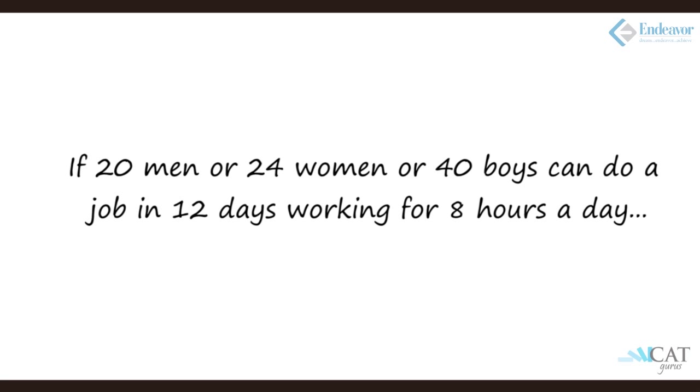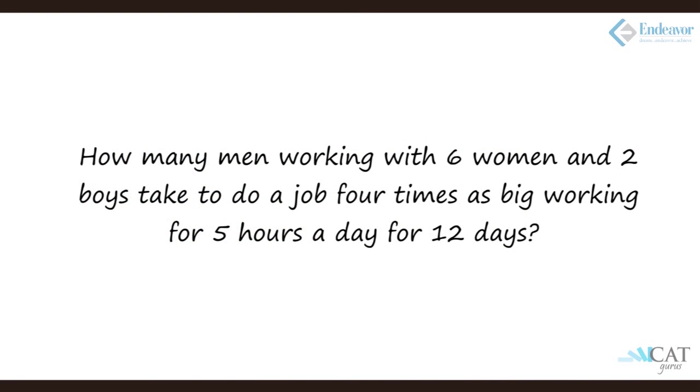Let's have a look at another one now. If 20 men or 24 women or 40 boys can do a job in 12 days working for 8 hours a day. Now what does this mean? 20 men into 12 into 8, that is the total time taken in terms of man hours. 24 women into 12 into 8, that is the total women hours taken to complete the job. 40 into 12 into 8 is total boy hours time taken to complete the job. Now let's understand the question further. How many men working with 6 women and 2 boys take to do a job 4 times as big as the previous one for 5 hours a day for 12 days? So we know that the number of women who are going to work on this, which is 6, 2 boys, but they will work on different timings, 5 hours now, and they will work in all for 12 days to complete the job.